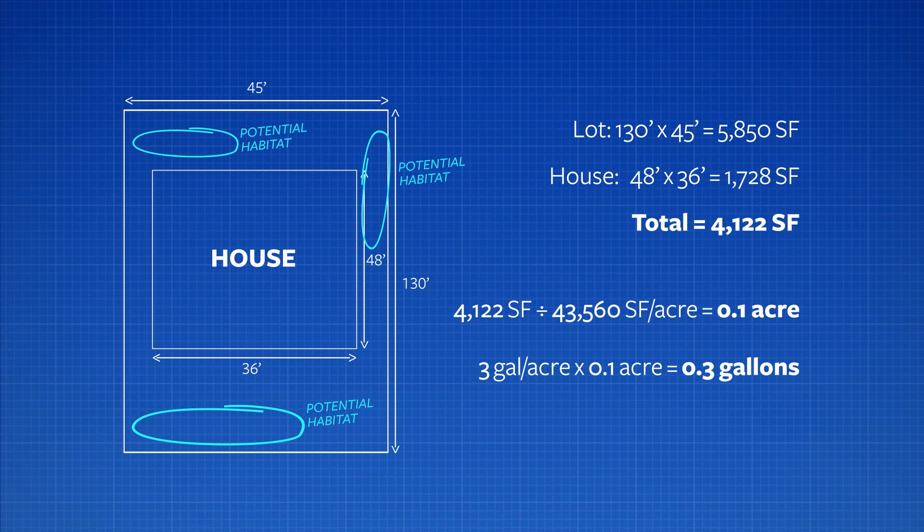So you don't have to, you would not in that case have to treat the entire property. In that case, you would only target these areas of suspected habitat. And in that case, of course, it's much less than the 0.3 gallons per acre. So this approach to calibration is somewhat more of an art than a science when we're dealing with these residential lots.